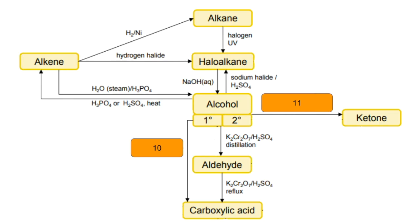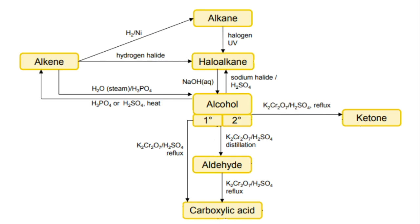Number 10: primary alcohol all the way to a carboxylic acid — use the same oxidising agent but this time with reflux. And the last one, number 11: secondary alcohol to ketone — use exactly the same oxidising agent and reflux.